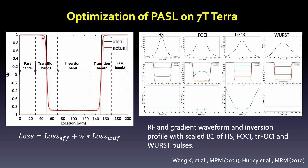Initial implementation of ASL used PASL — pulsed ASL — due to its technical simplicity and lower SAR value. Many groups have tried to optimize the adiabatic inversion pulse for PASL, such as hyperbolic secant (HS), foresight, TI-foresight — which is a piecewise waveform — tried to improve resilience to B1 inhomogeneity, as well as the WURST wideband inversion pulse.